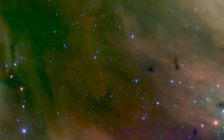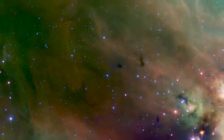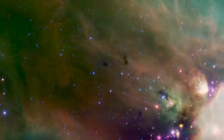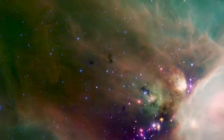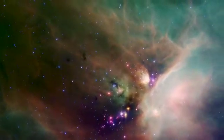Also known as Lynds 1688, this region contains over 300 baby stars with ages of up to a few hundred thousand years. The dusty envelopes around the youngest stars make them appear red in this rendering.